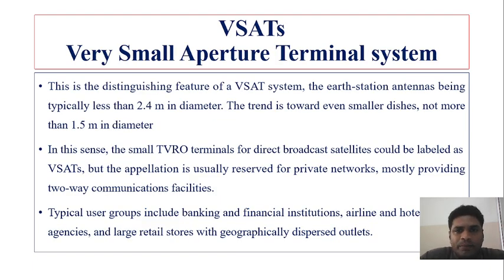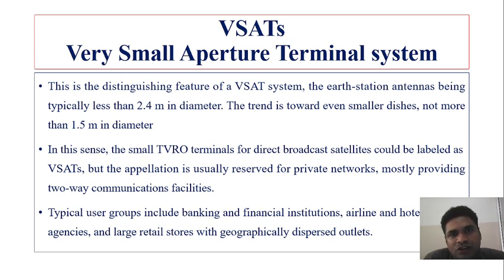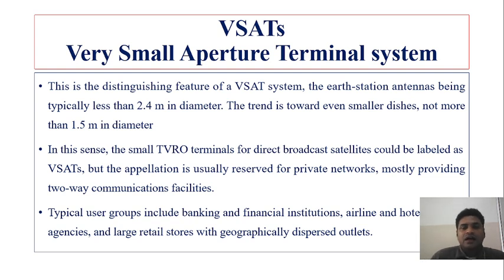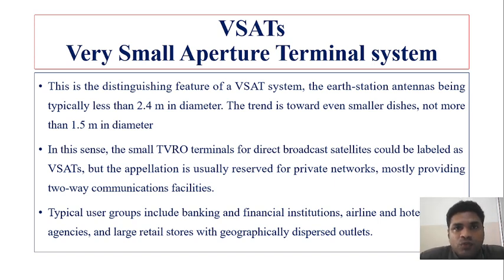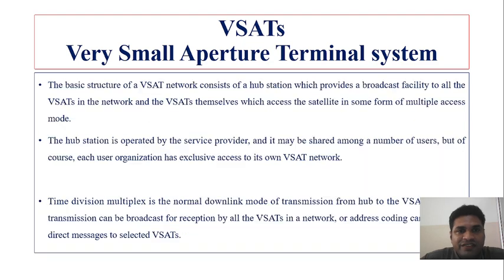We will also discuss the Very Small Aperture Terminal, or VSAT, system. A VSAT is an earth station antenna less than 2.4 meters in diameter. These small dish antennas can be placed on terraces to receive television signals or various satellite signals used by telecommunication operators, banking, hotels, financial institutions, and airline booking systems — essentially commercial groups using satellite signals.